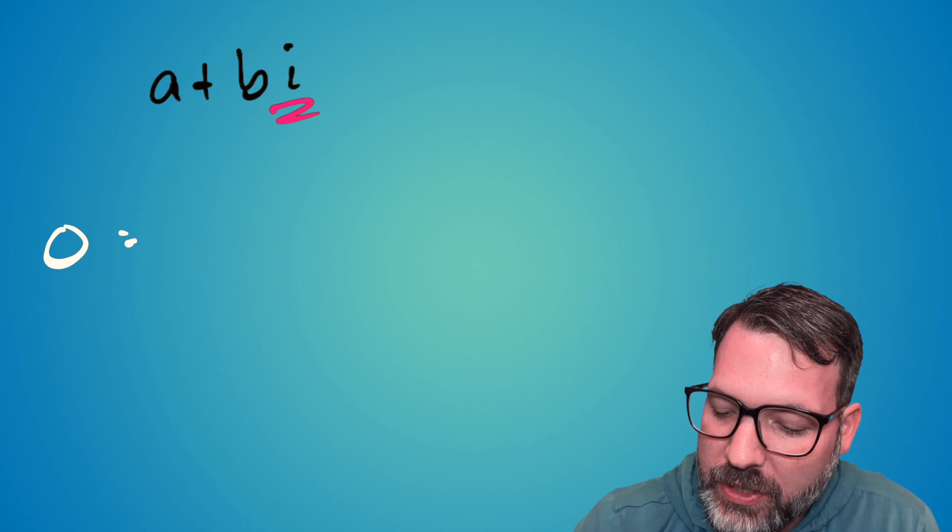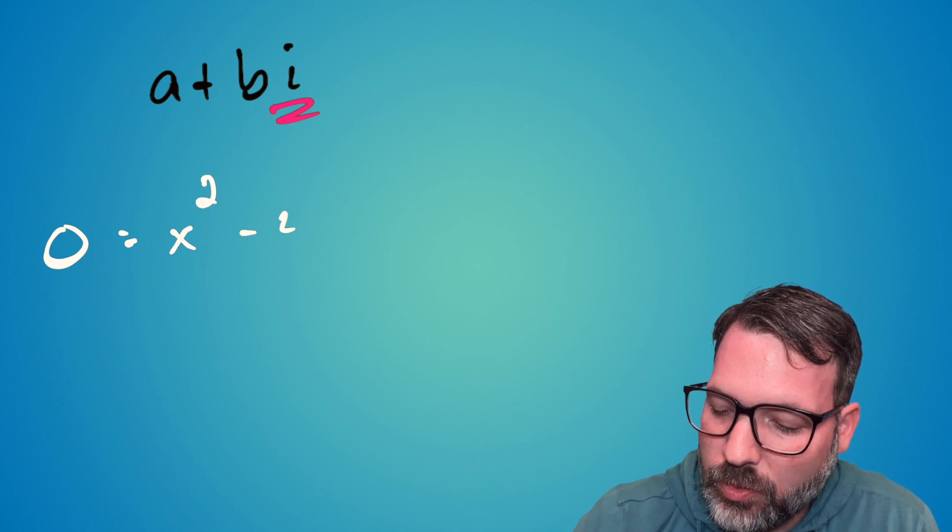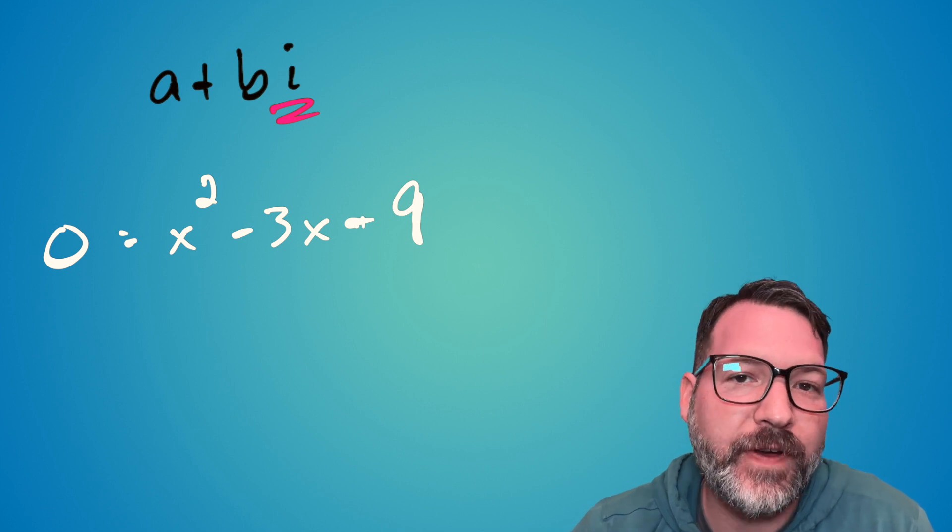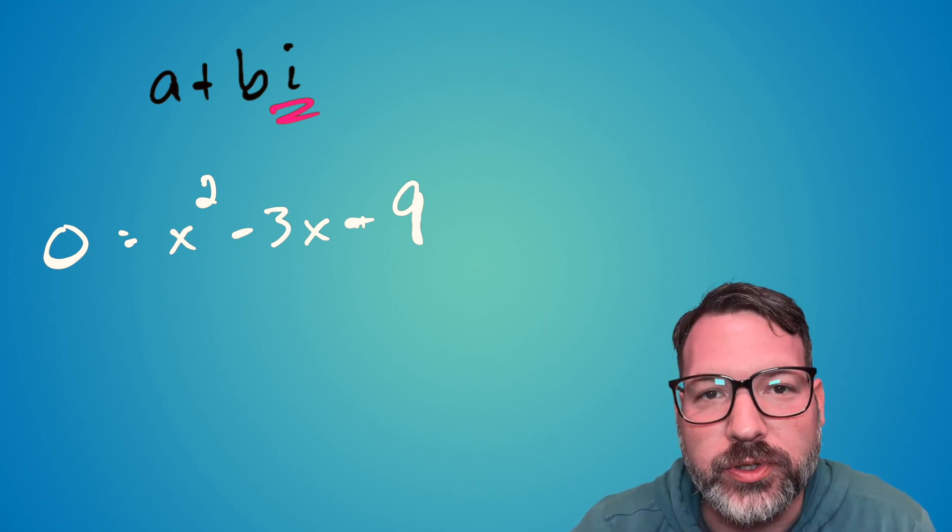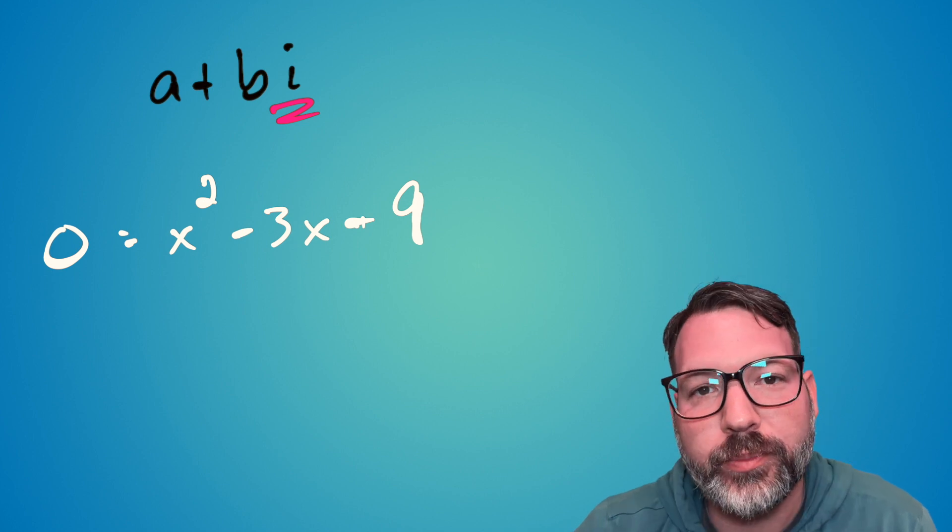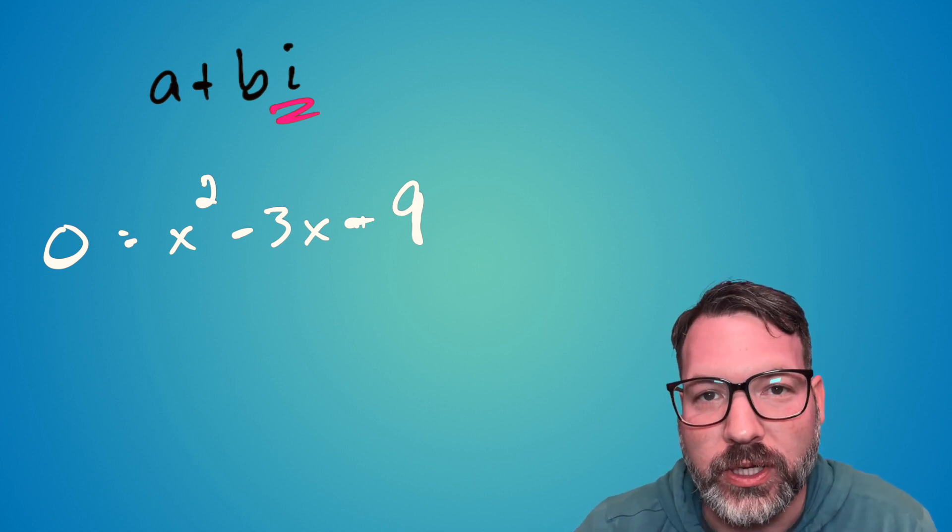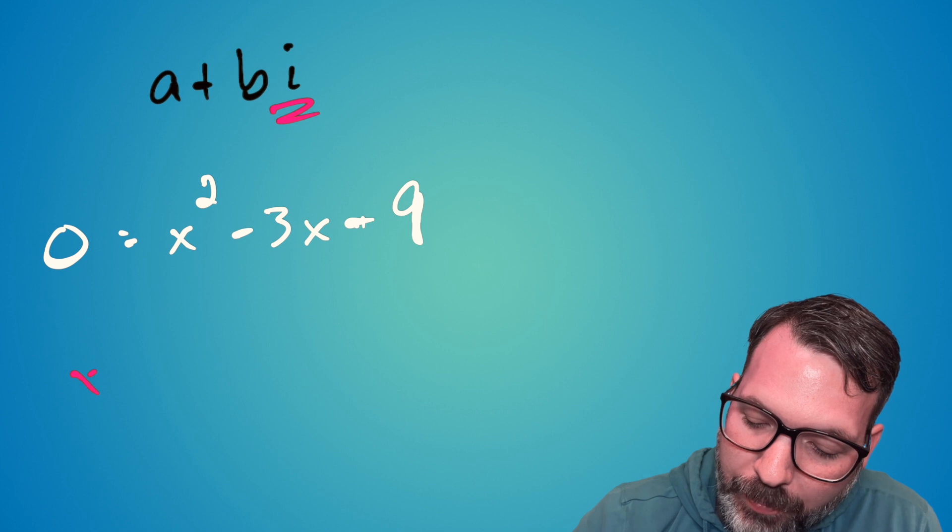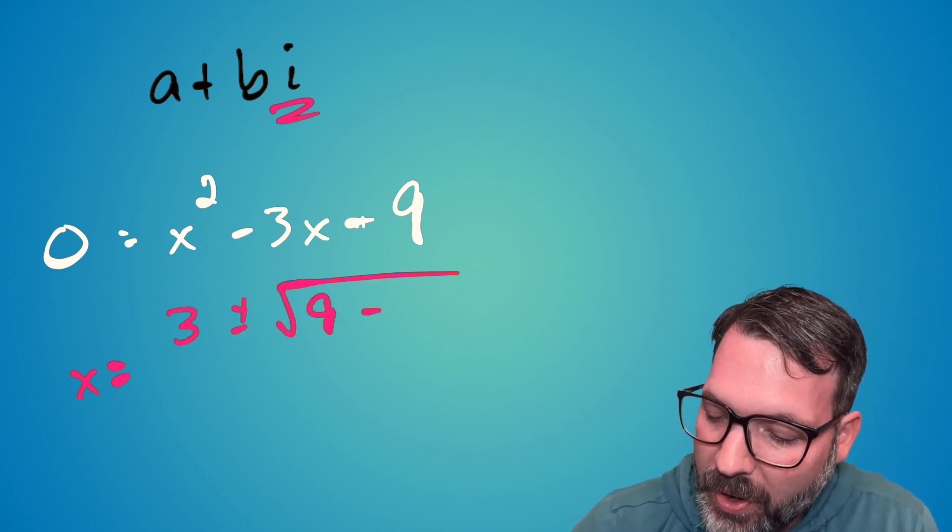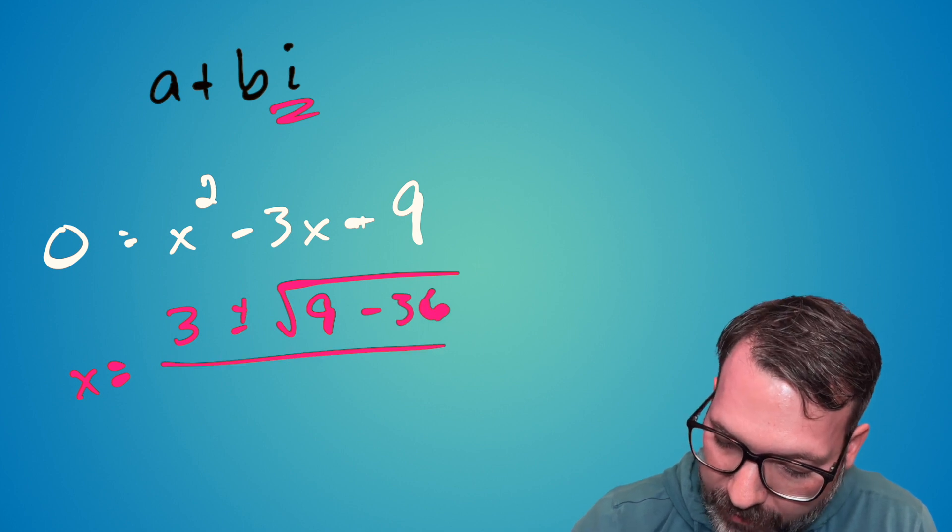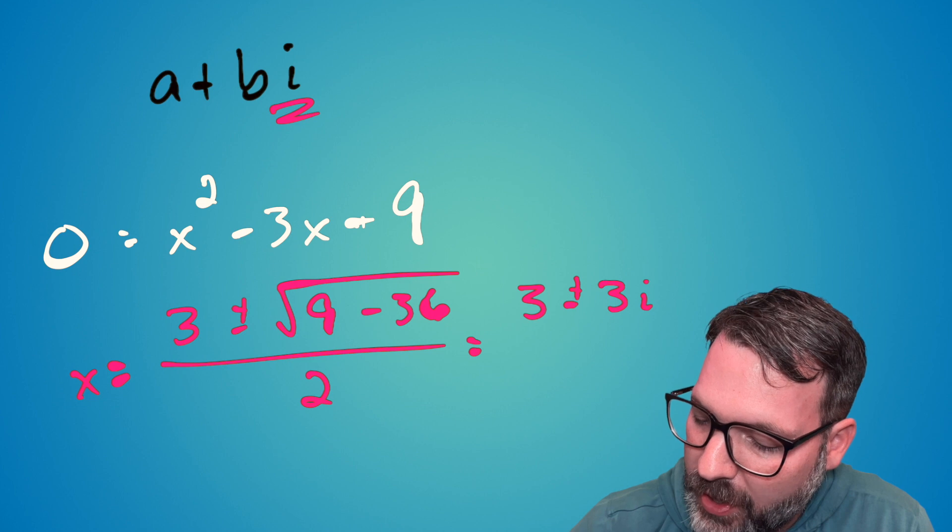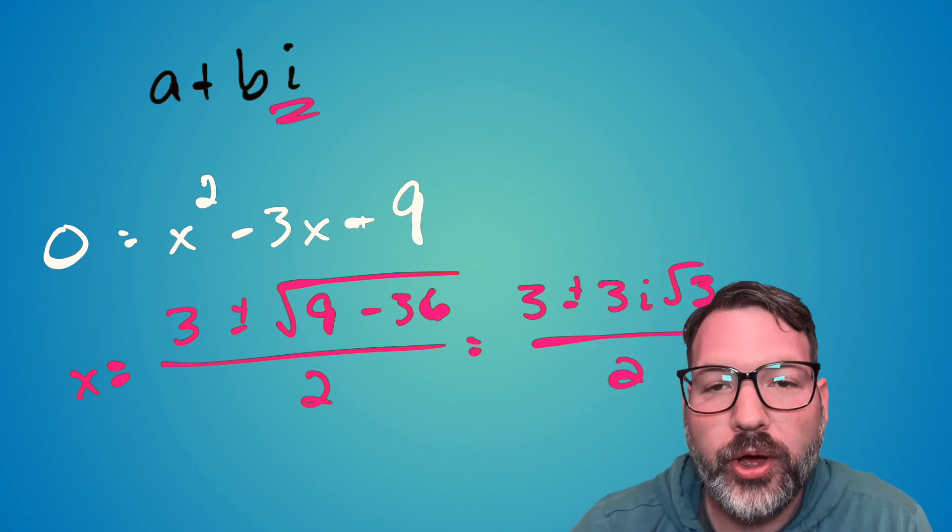Lots of polynomials have solutions of this form. For example, consider something like 0 equals x squared minus 3x plus 9. If you try to factor this to find rational solutions, you won't be able to. If you try to plug it into the quadratic formula to find some real solutions, you won't be able to. What you'll get back from the quadratic formula is positive 3 plus or minus 9 minus 36, all divided by 2.